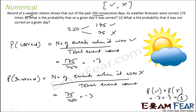That means on any day, either it was correct or it was incorrect. On any day, either the forecast by the weather station was correct or incorrect — that is 1.